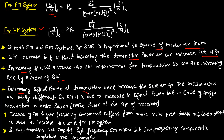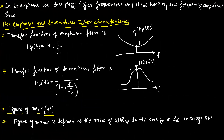In AM, SNR improvement is achieved by increasing signal power. But in angle modulation, it is the noise power at the output of the receiver that matters. In frequency modulation, higher frequency components suffer from more noise. Pre-emphasis and de-emphasis are used to increase SNR for FM systems. In pre-emphasis, we amplify high-frequency components while low-frequency amplitudes remain unchanged. In de-emphasis, we attenuate high-frequency amplitudes while keeping low-frequency amplitudes the same.